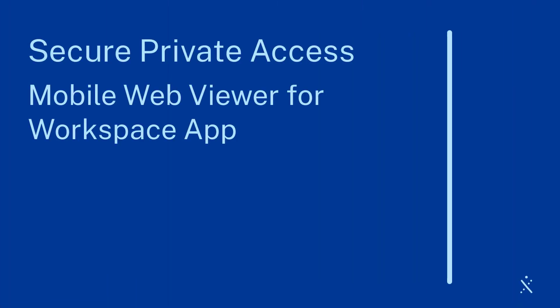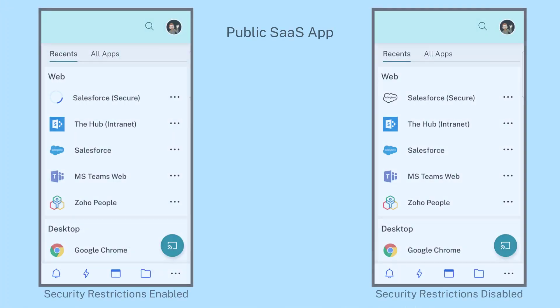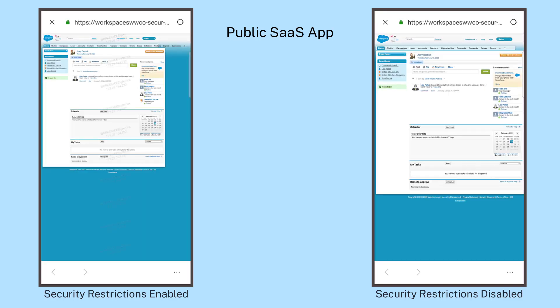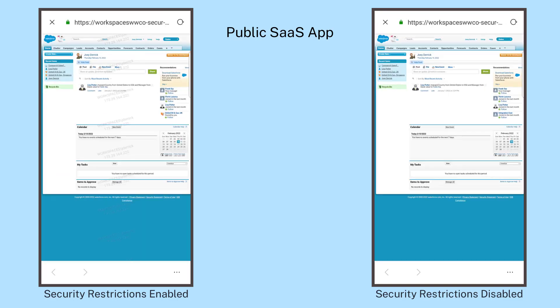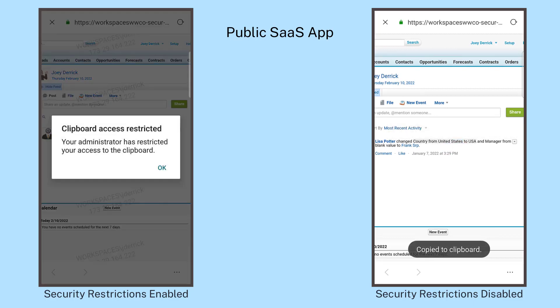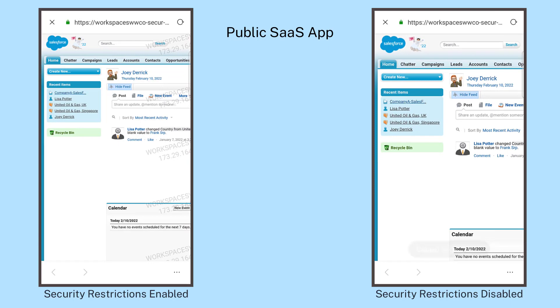The Mobile Web Viewer for Citrix Workspace app provides single sign-on and adaptive access security policies to private web apps and SaaS apps. Users continue to leverage the features they're accustomed to in any modern mobile browser while the organization improves mobile application security, all without impacting the user experience.